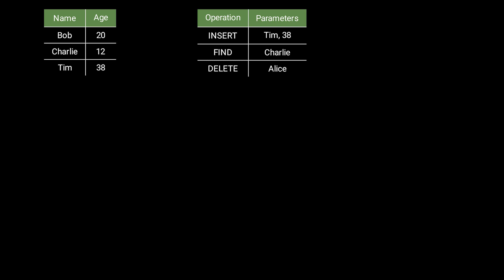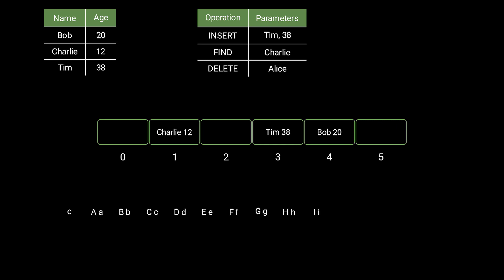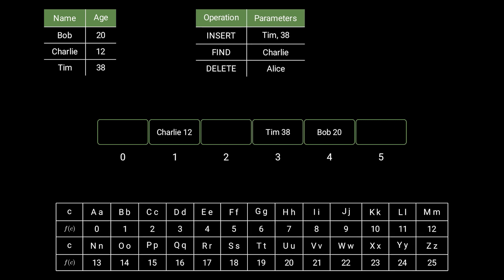Hash maps are usually implemented on top of an array where each element contains both the key and the value. But how do we decide where to place each element in the array? We need to assign a slot for each key. For example, we could assign a number to each letter, then sum them.